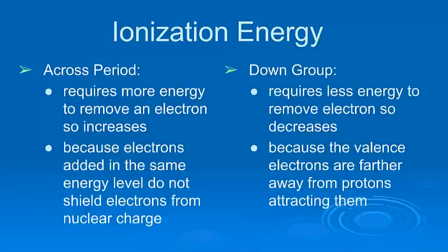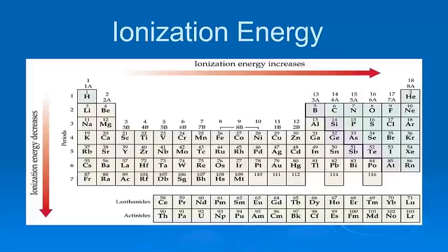As I go down a group, though, it takes less and less energy to take an electron away. Why? Because the valence electrons are getting farther away from the nucleus. And that means that they're not feeling attracted to the nucleus as much as they could be. It's easier to take them away. So, ionization energy increases as you go across from left to right. It gets bigger. But as you go down a group, it gets smaller.